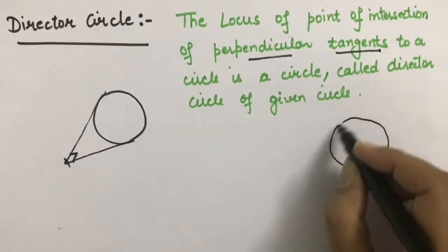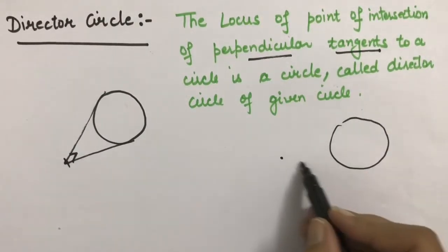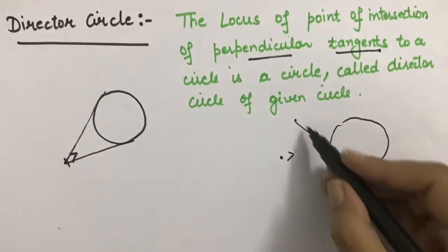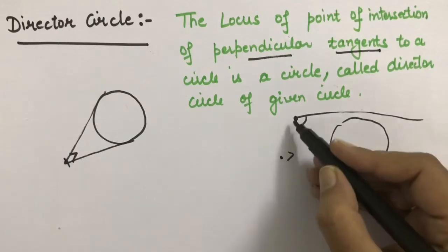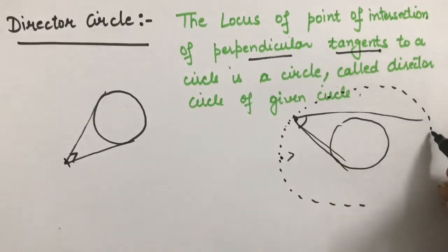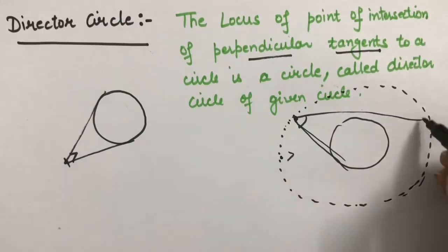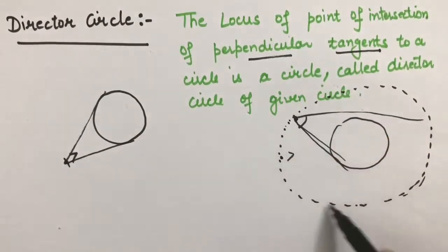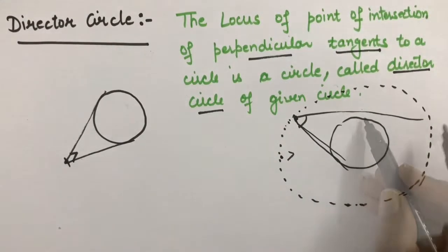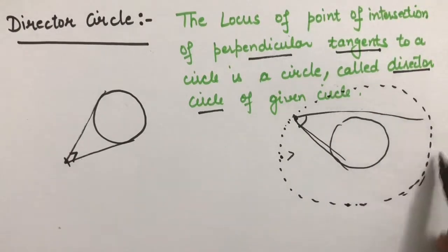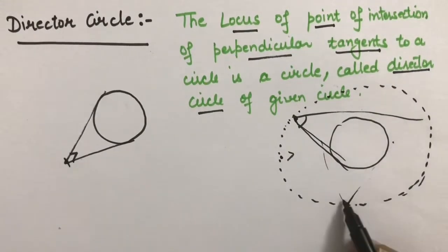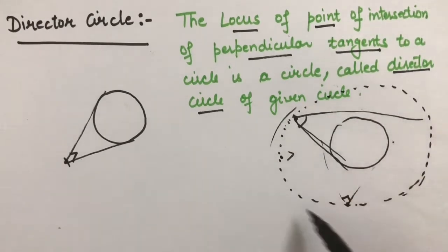Suppose we take a point — if I draw tangents from here, and then another point — if I draw tangents from there, I collect those points where the tangents are perpendicular. After collecting all such points, that collection of points forms again a circle. The angle of the tangents is 90 degrees, so we call this collection of points the director circle.